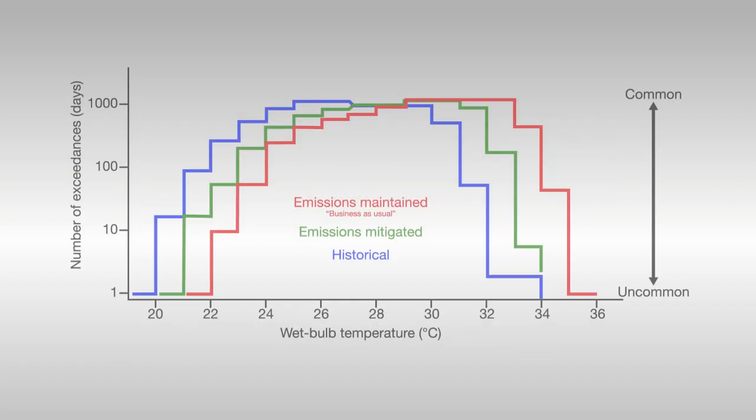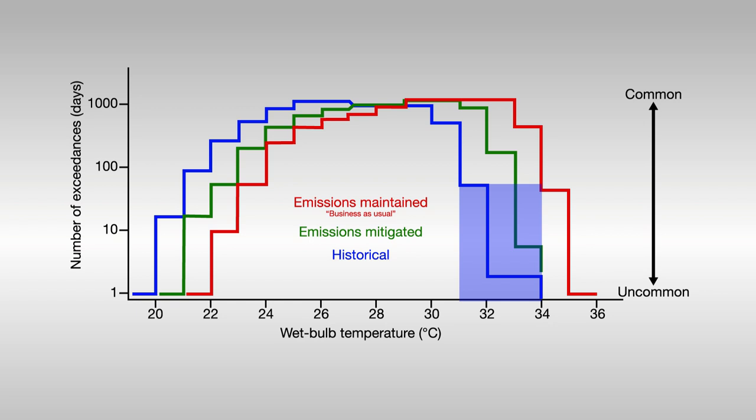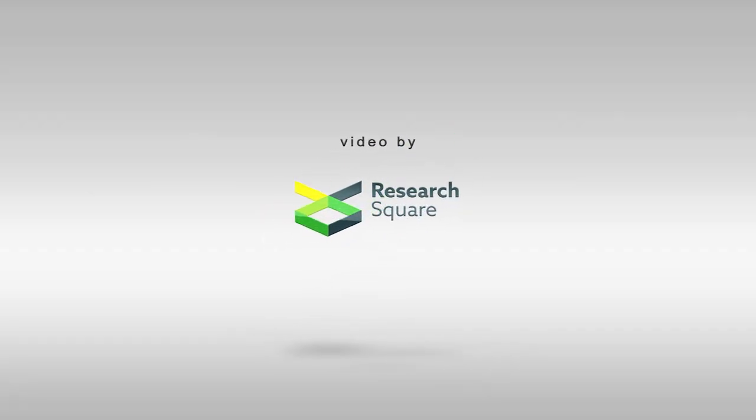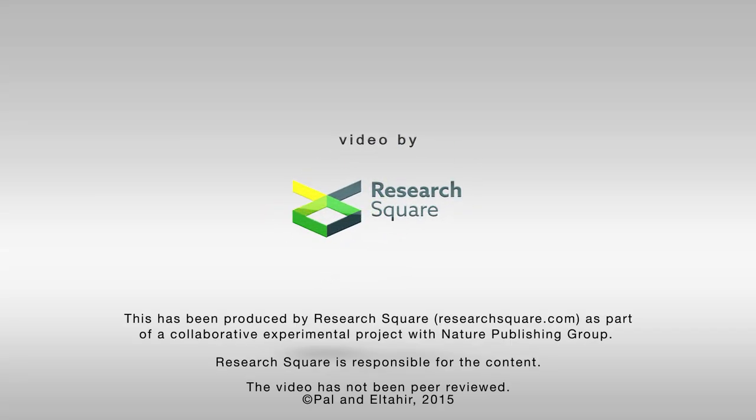But under this scenario, the uncommonly high wet bulb temperatures that today occur in the Gulf about once every 20 days will characterize the normal summer day of tomorrow.